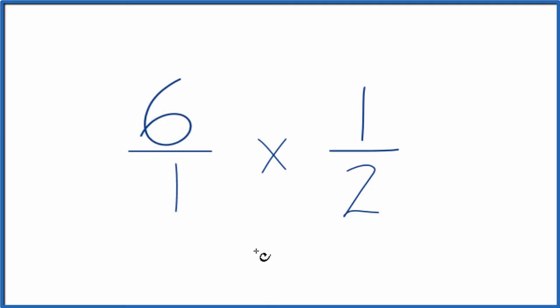When we're multiplying fractions, we take the numerators, we multiply the numerators together first, then we multiply the denominators. And that'll give us our answer here.